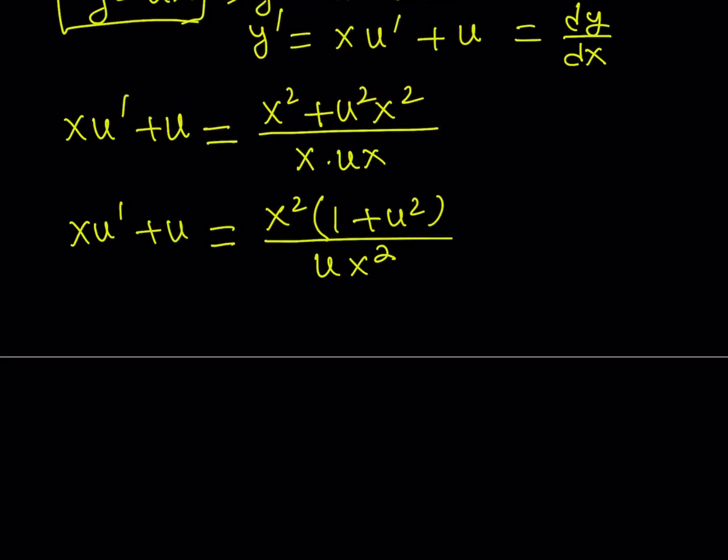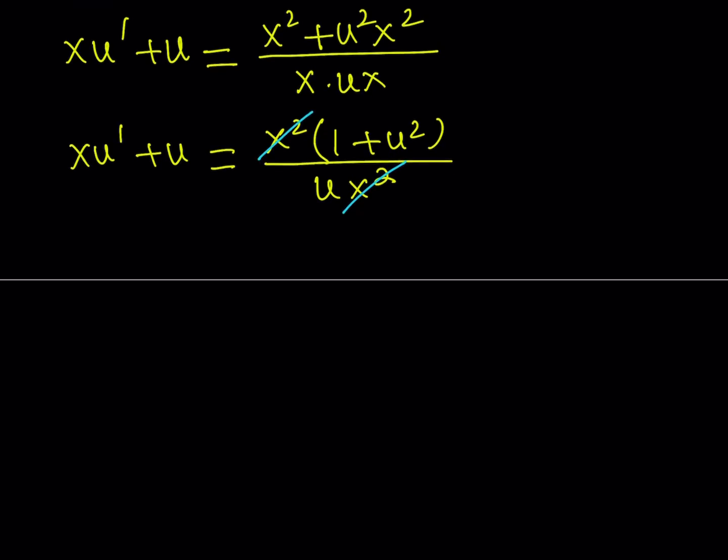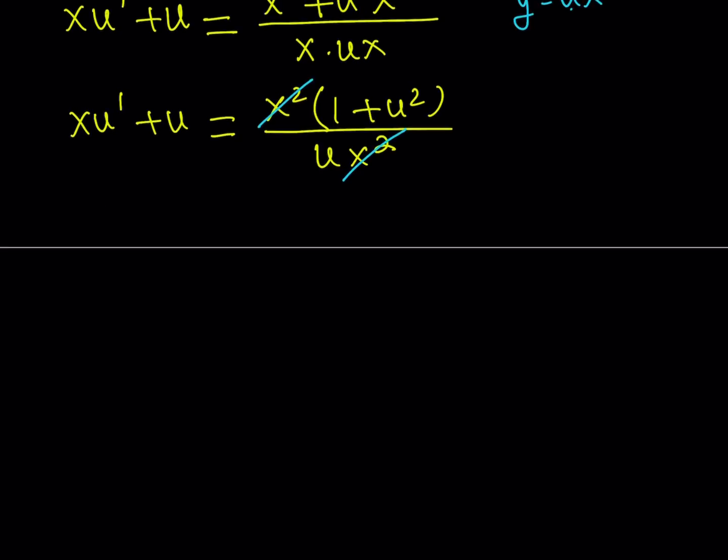Since x does not equal 0, we already talked about that at the very beginning, x and y will not be 0. We get the following expression and since x and y are not going to be 0, u is not going to be 0 either because we assume that y equals ux. If u is 0, then y has to be 0, but that's not possible. So u is not going to be 0 either. Therefore, we can separate this into two fractions and write it as xu' + u equals 1/u + u² divided by u is equal to u in this case.